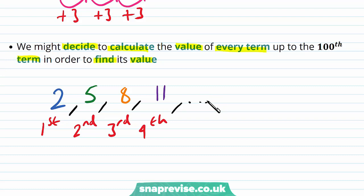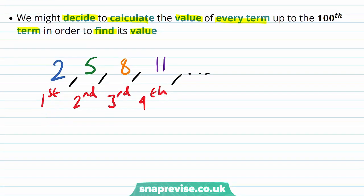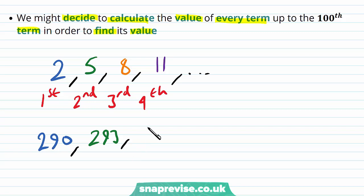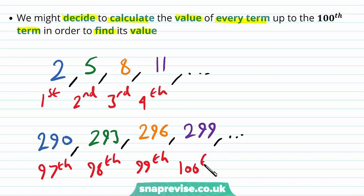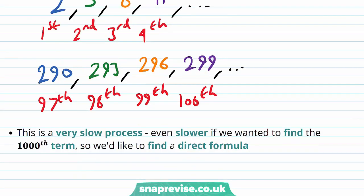But to get to the 100th term this goes on for quite a while. It turns out we get all the way up to 290, then 293, 296, and finally for our 100th term, 299. So again this is our 97th term, 98th term, 99th term, and the 100th term. This is a very slow process, even slower if we wanted to find the 1,000th term, or the 1,000,000th term. So we'd like to find a direct formula for calculating each term.